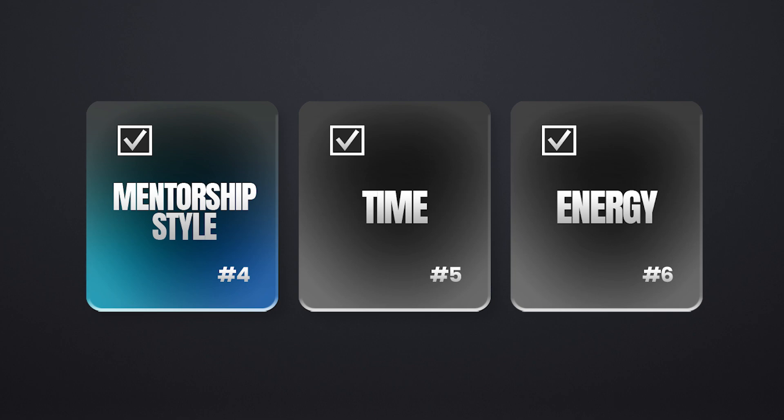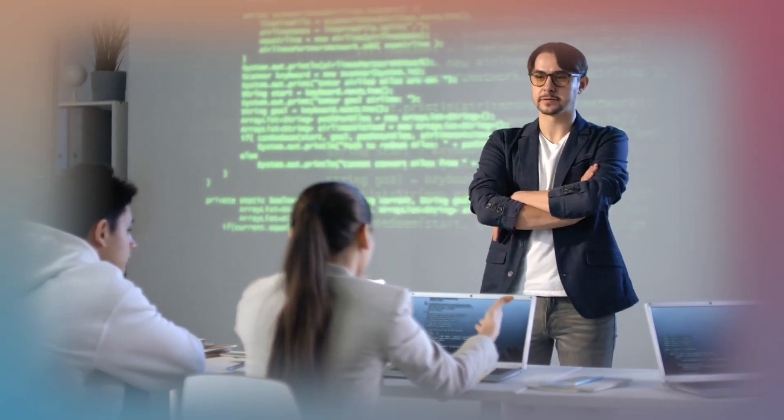This goes hand in hand with time, and that's energy. Some advisors have lots of energy for mentorship and really invest a lot of their personal time and energy into it, and others don't. You could be applying to work with someone who has all the time in the world but doesn't have the energy to work with you. You need to find someone who is excited and really engaged with what you're doing. Younger professors tend to have more energy because their career success is contingent on your career success. The way to figure this out is to talk to their current graduate students and people who have worked with them in the past.